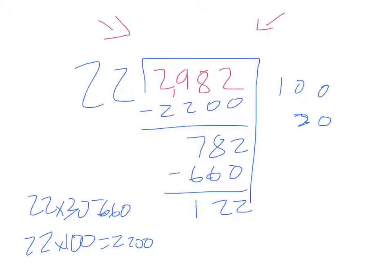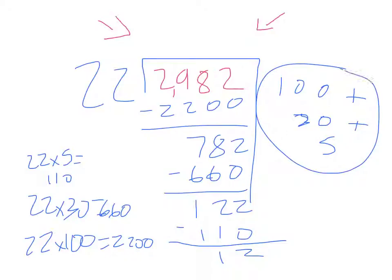Well, I know that 22 times 5 equals 110. Let's add 5, and then we're left with 12. Once we add 100 plus 30 plus 5, we will get our quotient, which is 135. Let's not forget our remainder, which is remainder 12.